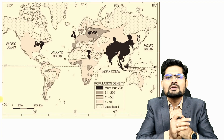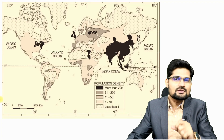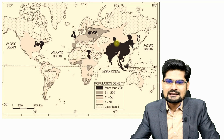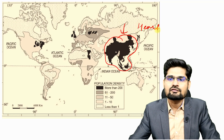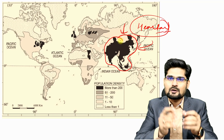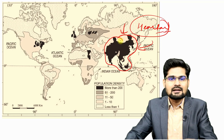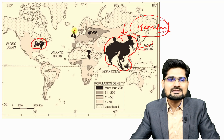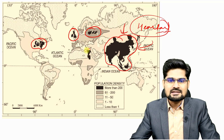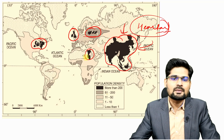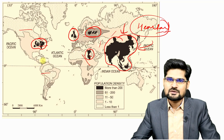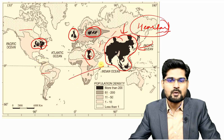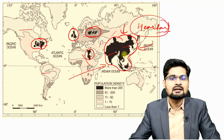Looking at the world population map, South Asia and Southeast Asia are the heartland of 21st-century population concentration — also serving as social capital. The densest populations are in India, China, and the Southeast Asian region. Some concentration also exists in Europe, Africa, and the Americas, but the primary focus remains in Asia.